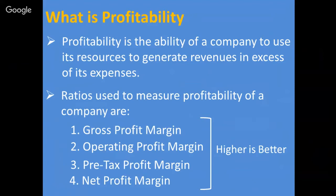ایک چیز ذہن میں رکھیں کہ کچھ ratios پر لوگ debate کر سکتے ہیں کہ یہ بہت زیادہ high ہو گیا یا بہت کم ہو گیا — financial analysts کا اختلاف ہو سکتا ہے۔ لیکن یہ چار ratios ایسے ہیں جن پر کوئی اختلاف نہیں ہے۔ یہ جتنے زیادہ ہوں گے، company اتنی اچھی ہوگی — اس پر کوئی dispute نہیں ہے۔